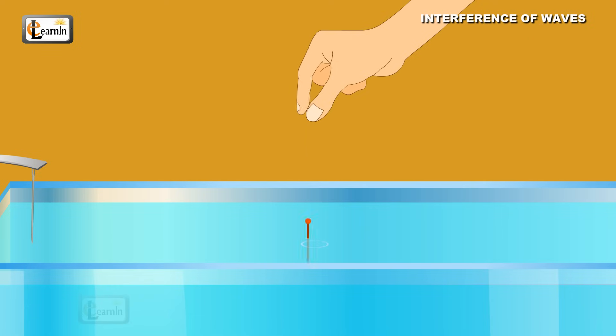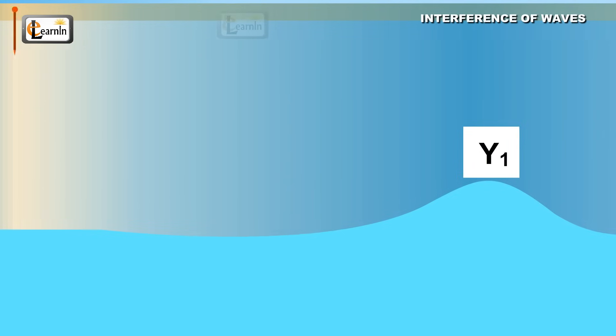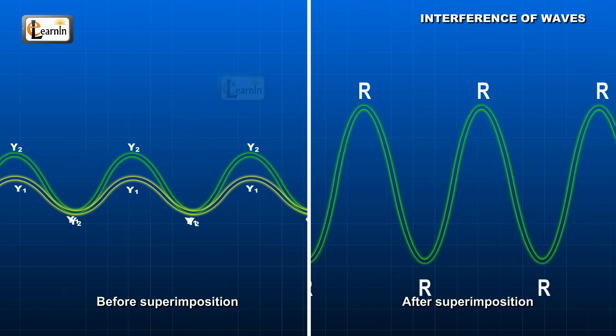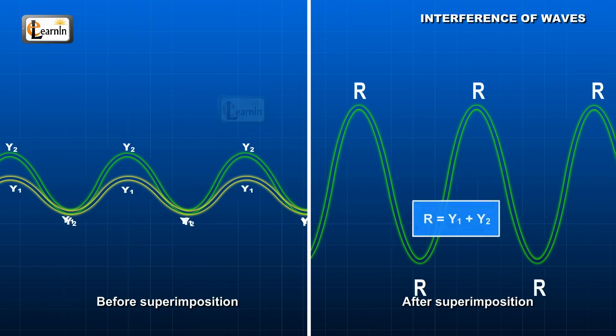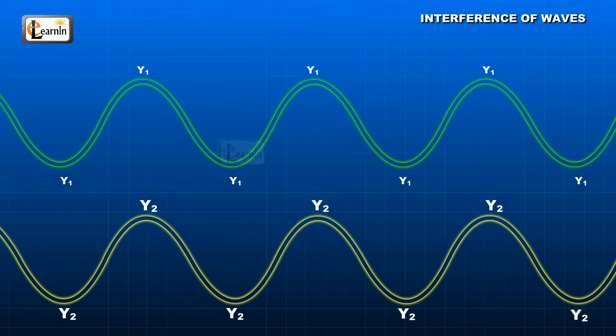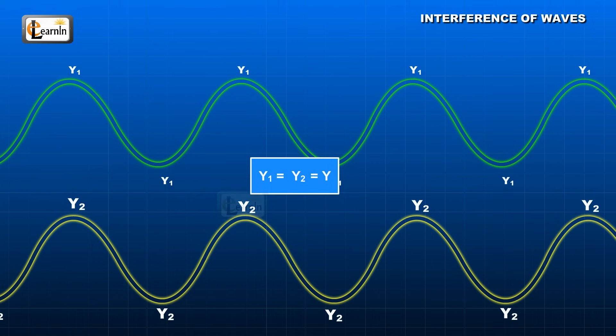In our case, the pin is dropped in a ripple tank with two pins. If y1 is the displacement caused at a point due to the first source, and y2 is the displacement caused by the second source, then the overall displacement r at the point of interference would be given by r equals y1 plus y2. When both sources have the same amplitude, then y1 and y2 would be equal to y.